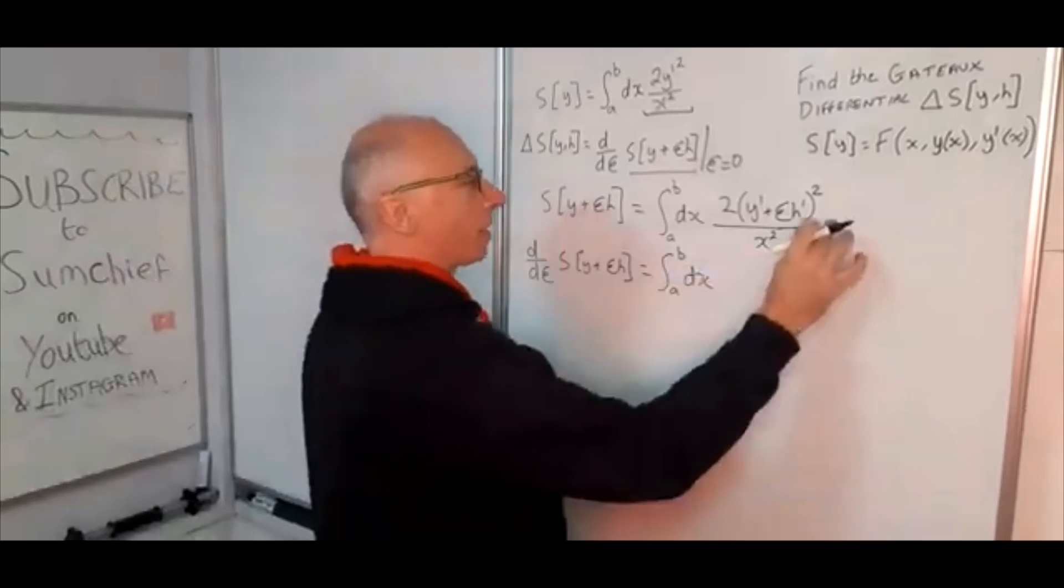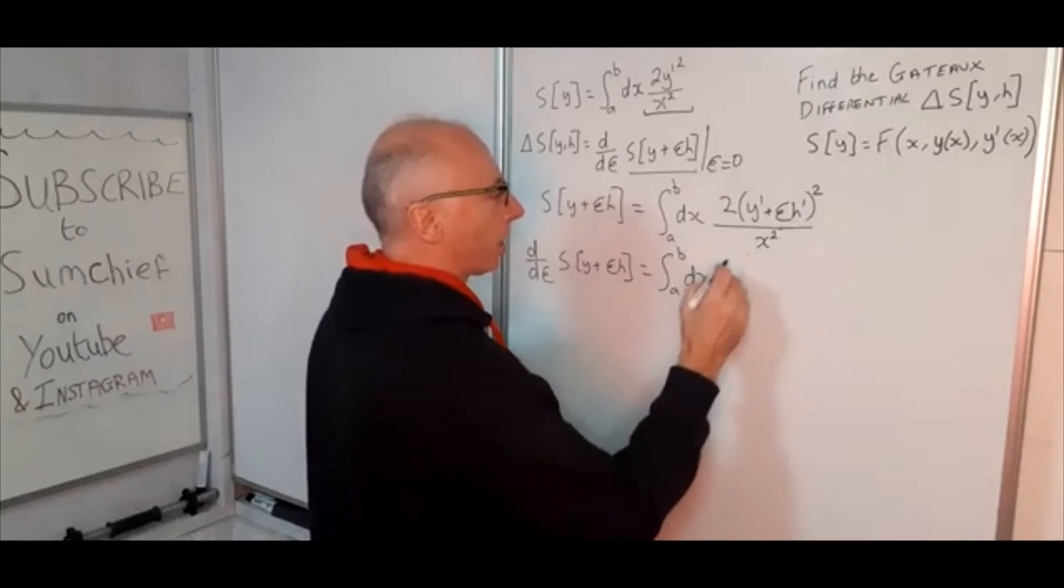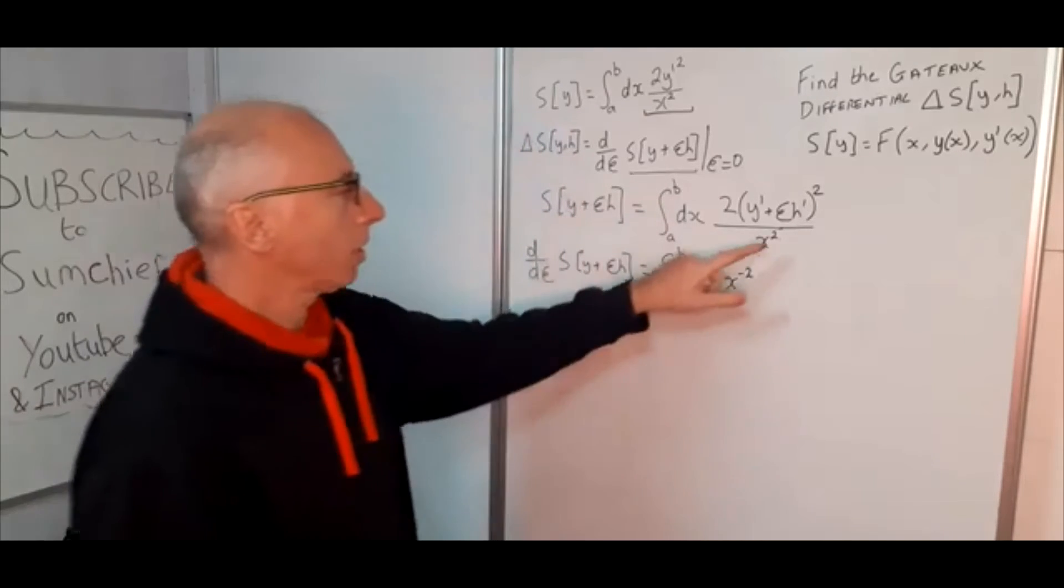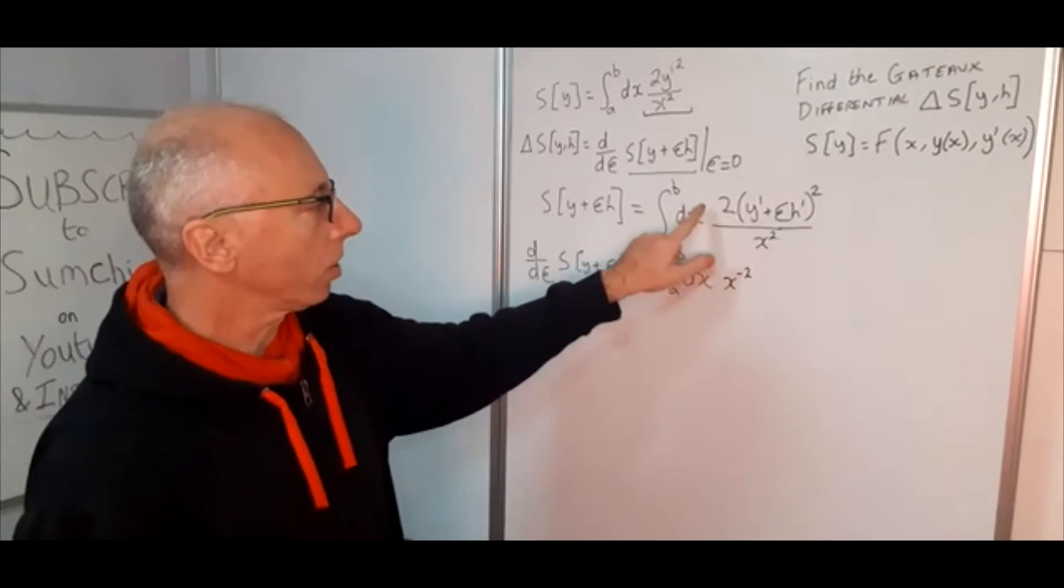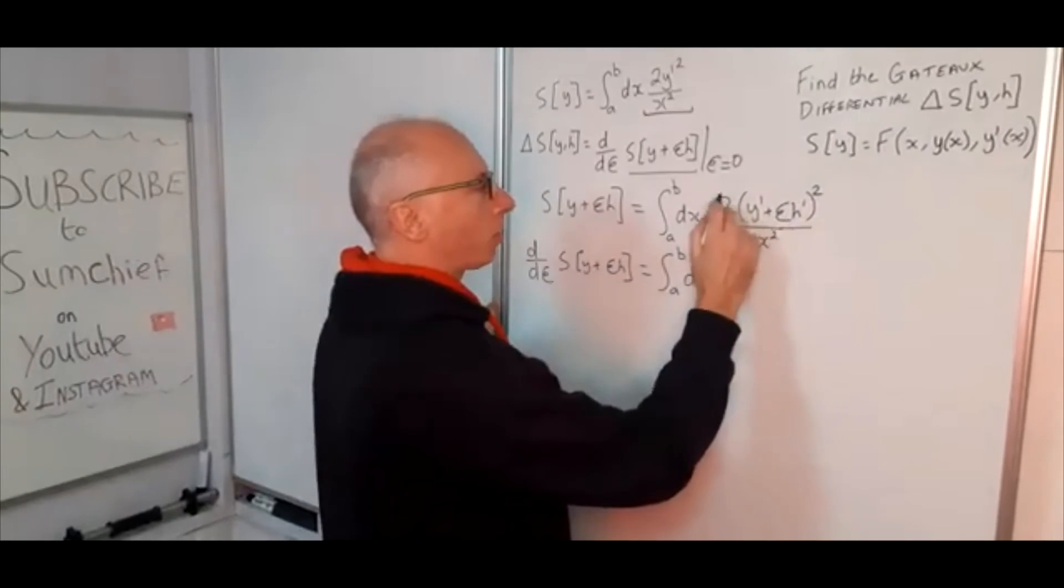Now this x squared, I am just going to write this as x to the minus two up here, or I can put it out front here actually. So I am going to write the x to the minus two because that has nothing to do with the epsilon h so that can just stay at the side and then we can use the chain rule here.